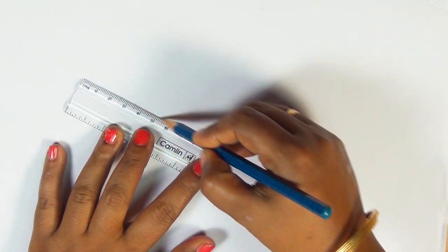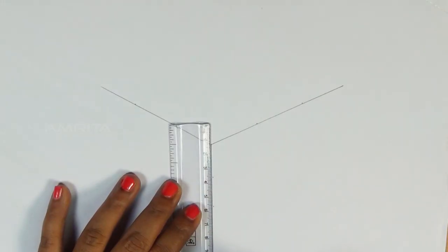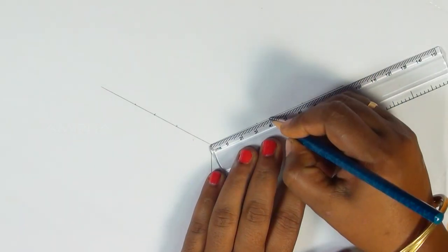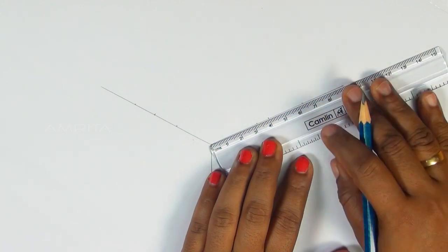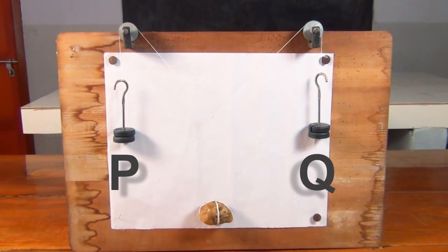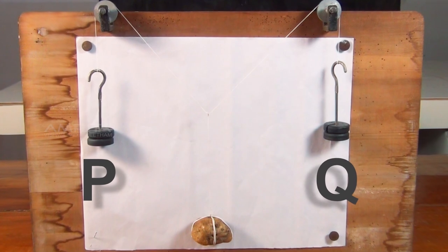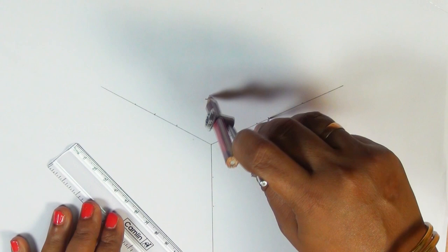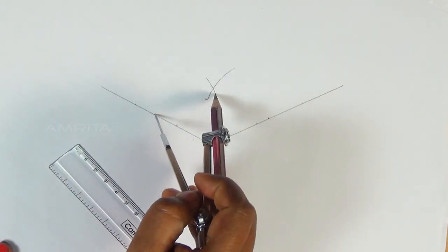Assuming a scale of 50 grams equals 2 centimeters, mark OA equals 4 centimeters and OB equals 4 centimeters to represent P equals 100 grams and Q equals 100 grams. Complete the parallelogram OACB and join OC.